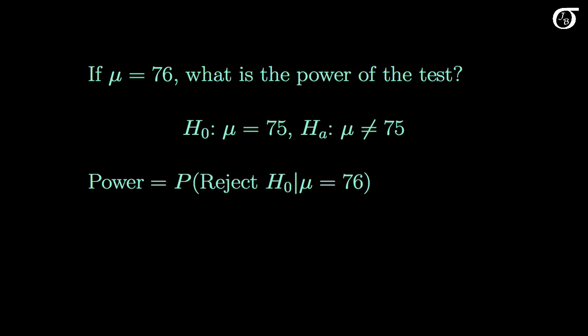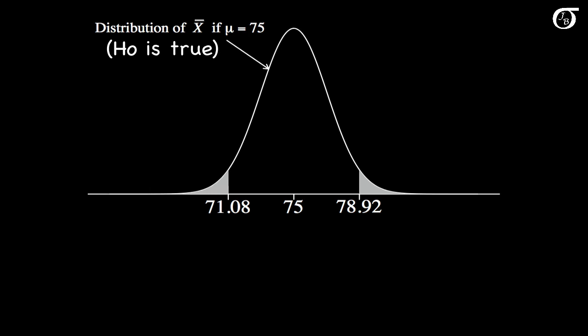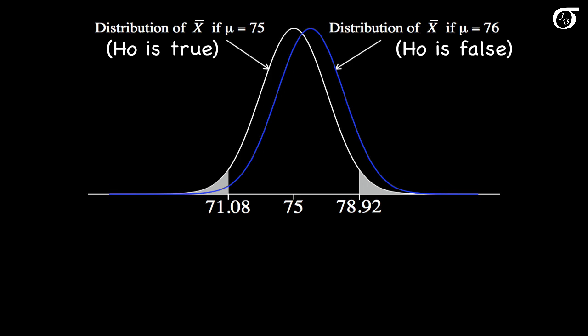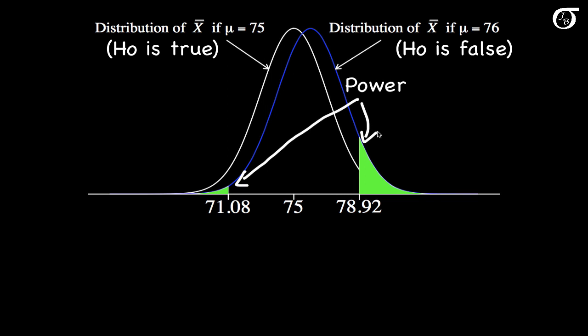Before doing any calculations, let's look at the appropriate areas we need to find on a plot. Here again is the sampling distribution of the sample mean x-bar if mu is actually 75, along with the appropriate rejection regions. Now I'm going to plot in a curve representing the sampling distribution of x-bar when mu is actually 76. The gray area under the white curve represents the probability of a type 1 error. The power is the probability of rejecting the null hypothesis when it is false, so the power corresponds to the areas under the blue curve — these two green areas combined.